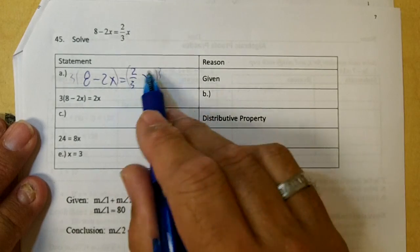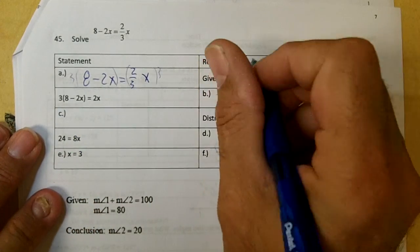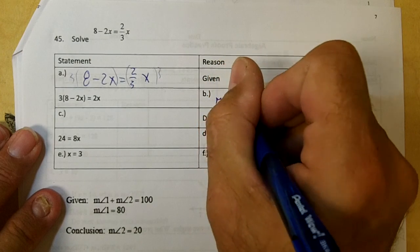That's going to eliminate the 3s on this side, right? But you'll have this, won't you? Okay, so your reason for this is your multiplication property.